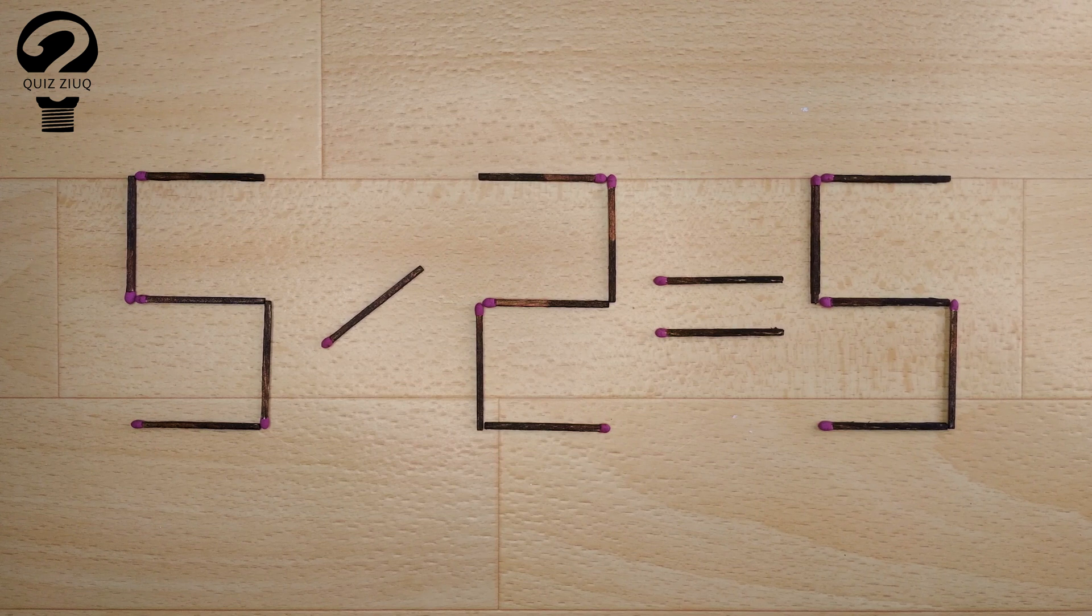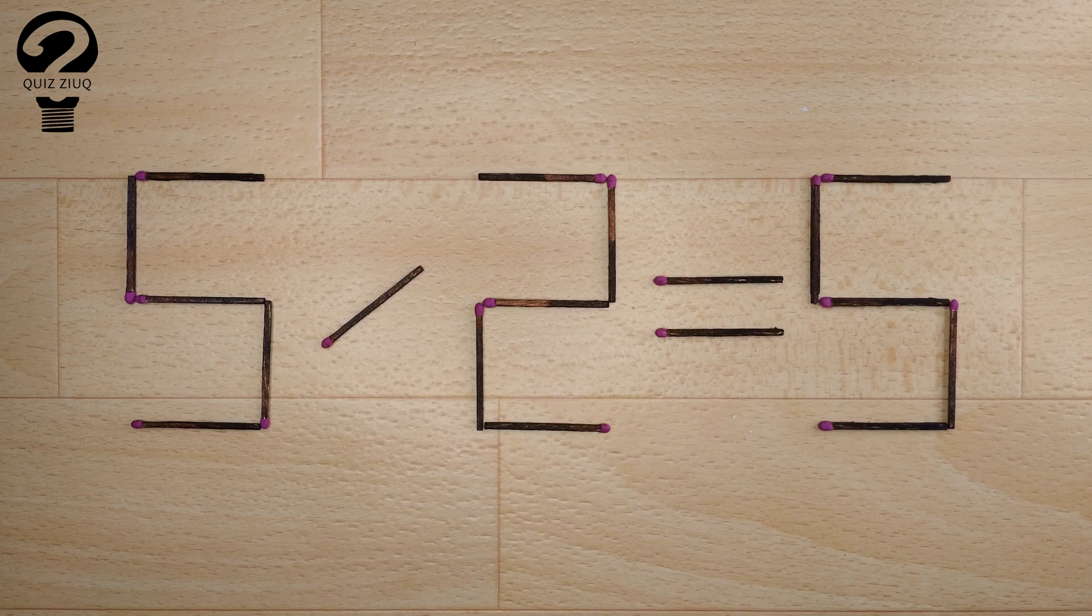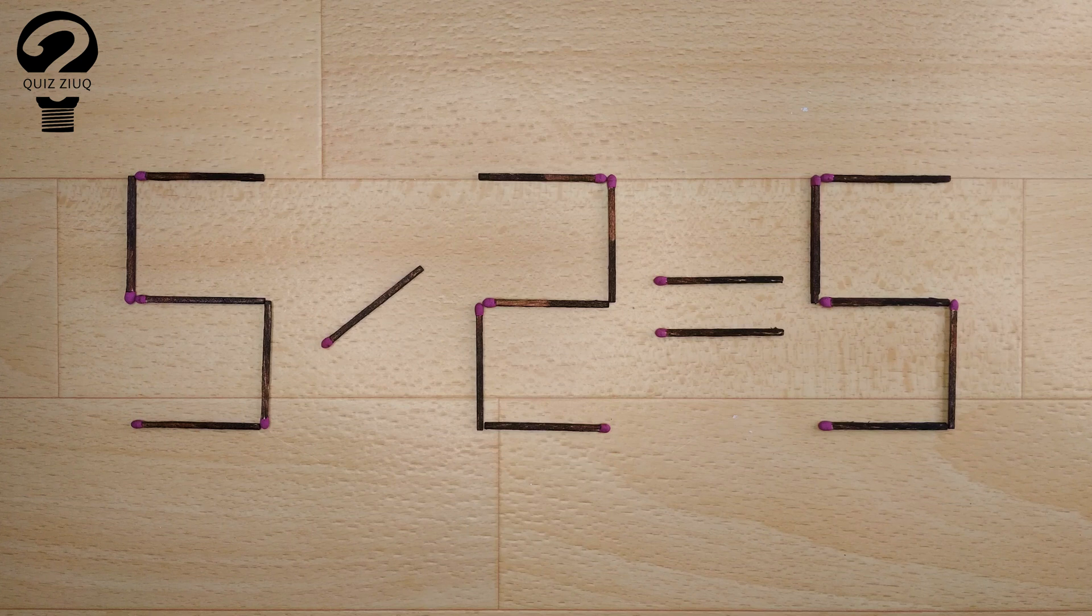We have this equation: 5 divided by 2 equals 5. Our equation is incorrect and we need to move two matches to make our equation correct.